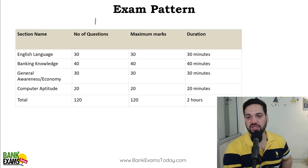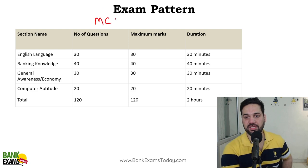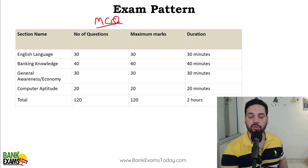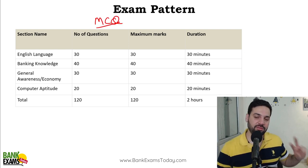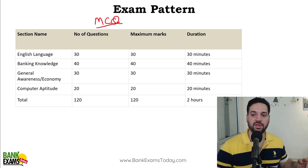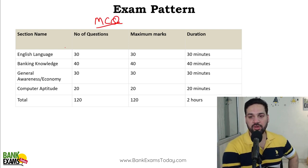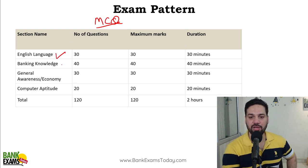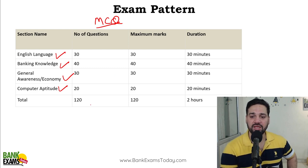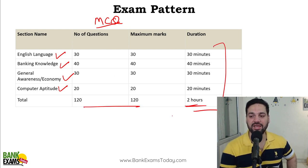This is the exam pattern. The paper is in two stages, both held together — descriptive and MCQ based. In the MCQ based paper, there is English language, banking knowledge, general awareness, economy, and computer aptitude. There are 100 questions, two hours are given, and there is sectional timing.